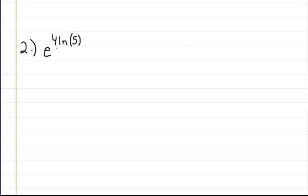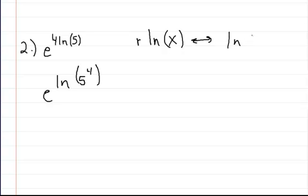The first thing you do is you're going to move the 4 into these brackets or into these parentheses. So you would get e to the natural log of 5 raised to the 4th power. And the reason you can do that is because if you have this property of the natural log, that can be rewritten as ln of x to the r, and that's just the property of the natural log. So it comes in handy.